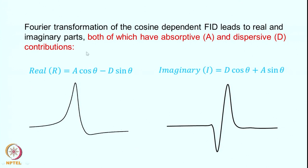The real part of the Fourier transform spectrum will have the form A·cos θ − D·sin θ, and the imaginary part will be 90 degrees out of phase, giving D·cos θ + A·sin θ. If you look at the real part, which is normally what you observe, it will have a distorted line shape — a mixture of absorptive and dispersive.